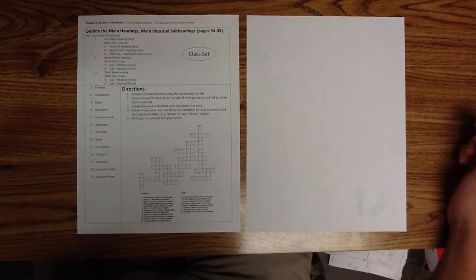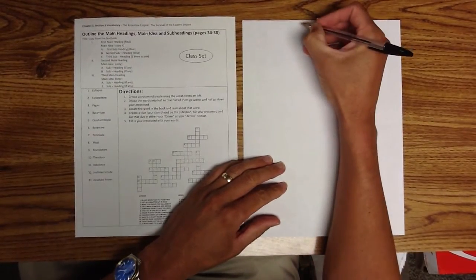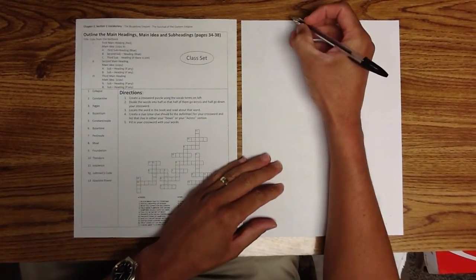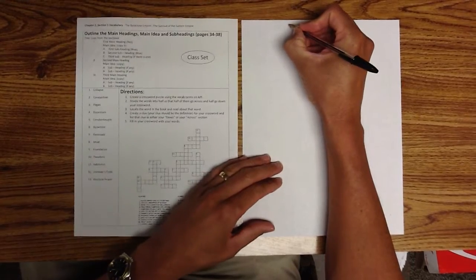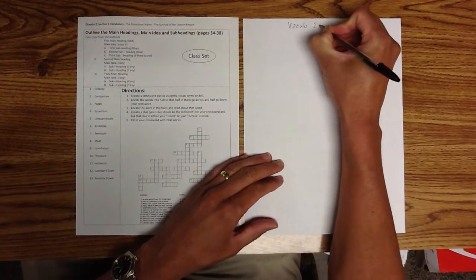This week's vocab starts off the exact same. You're going to start with your regular outline that we always do. You'll start with your title, vocab 2-1.